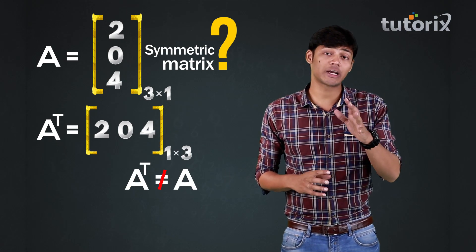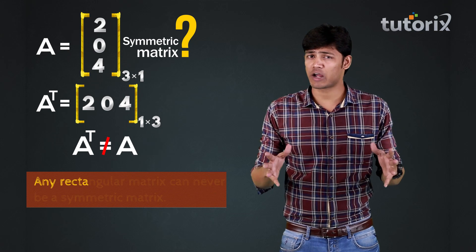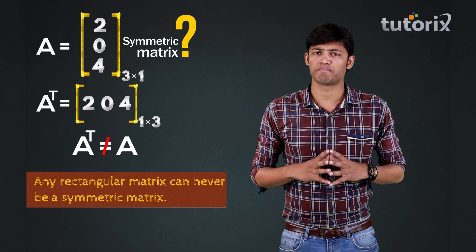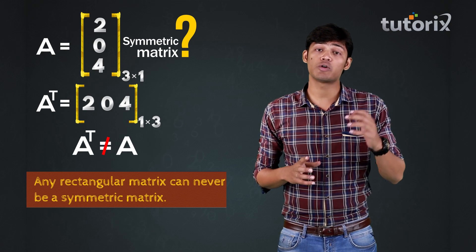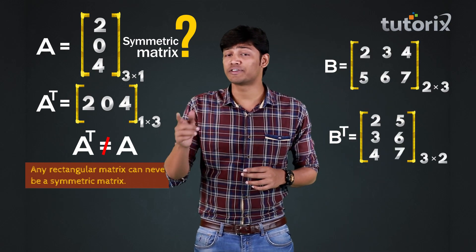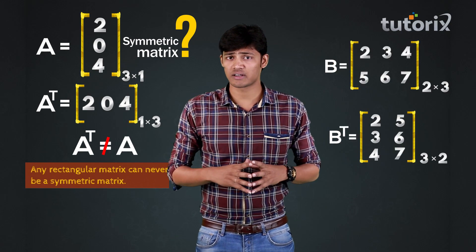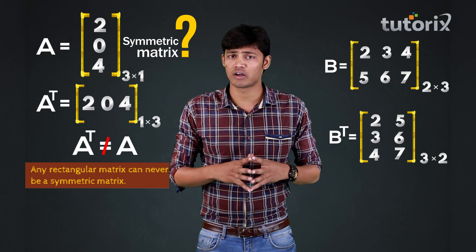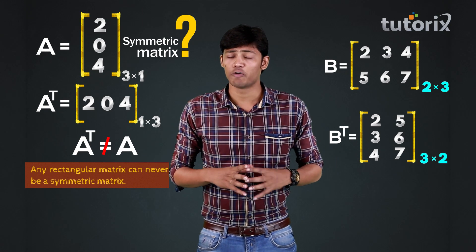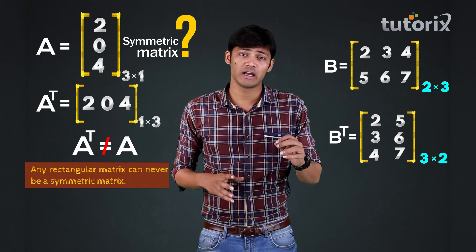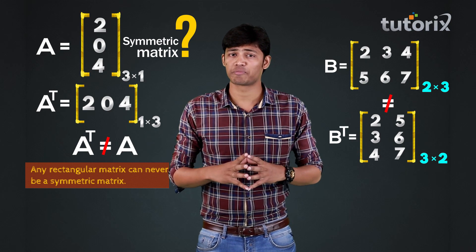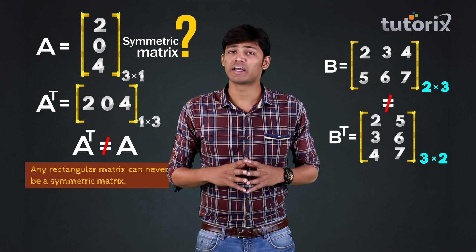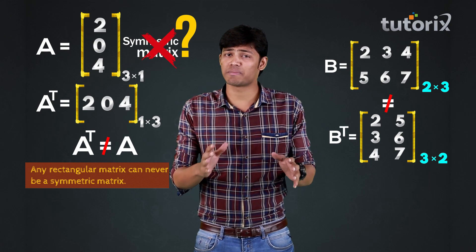An intuitive statement that we can claim is: any rectangular matrix can never be a symmetric matrix, because for a rectangular matrix, the order of that matrix and the order of the transpose of that rectangular matrix are always different, which implies that they can never be equal. So we can conclude that any rectangular matrix can never be a symmetric matrix.